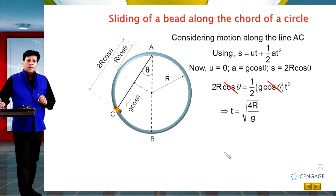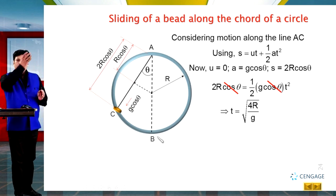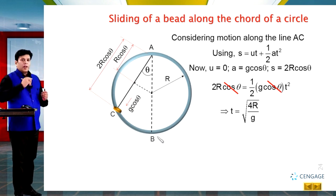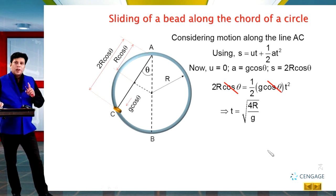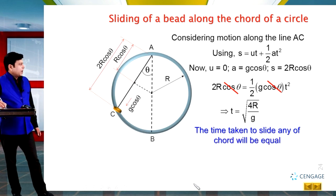We can observe that the time taken to slide the bead along this chord is the same as when it was sliding along the diameter AB. When sliding along the diameter the time was the same, and when sliding along any chord the time is also the same. This time is independent of theta — meaning the time taken to slide along any chord is equal to the time taken to slide along the diameter.